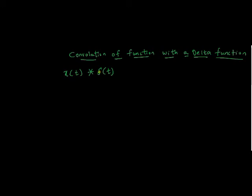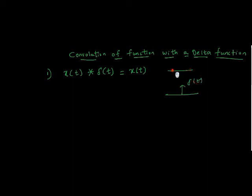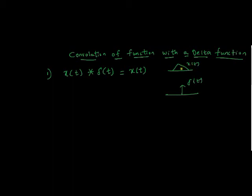If we convolve any function with a delta function, it remains the same. So the first property is: if we convolve x of t with δ(t), we will get x of t. Since the delta function acts as an identity factor, if we convolve x of t with δ(t), the signal will retain its original shape.